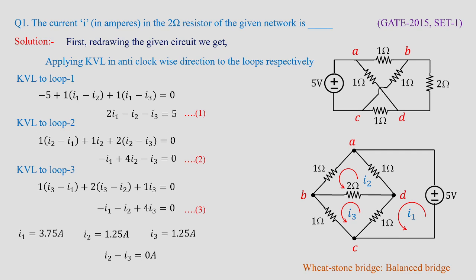If the bridges are unbalanced, then some difference of current will be flowing in the 2 ohms and a voltage will be developed. We will see that concept in later classes. But for the GATE examination, if you want the general solution using loop analysis, this is how you frame it. With the shortcut — the Wheatstone Bridge balanced bridge concept — you can simply ignore the diagonal element, and the current or voltage across that resistor will be 0.